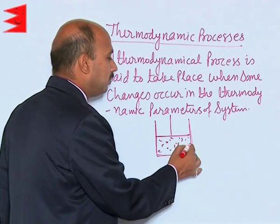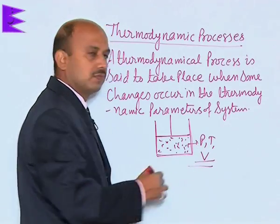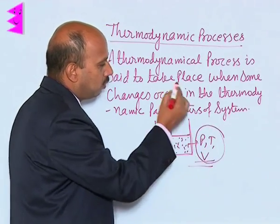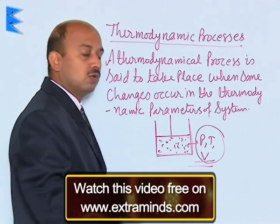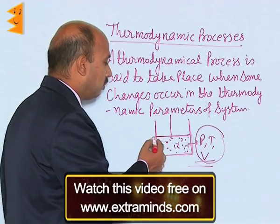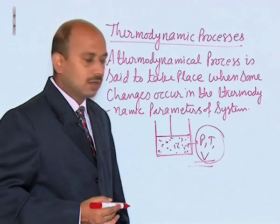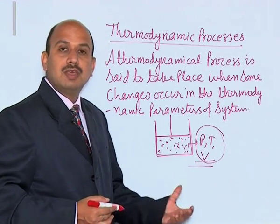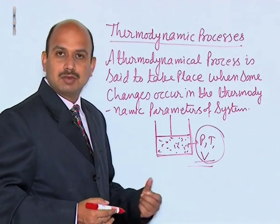It has got certain parameters like pressure, temperature, and volume. These are basically three thermodynamic parameters. If these three parameters do not change with time, then this thermodynamical system is said to be in equilibrium. But if these parameters are changing, then we say some thermodynamical process is taking place here.